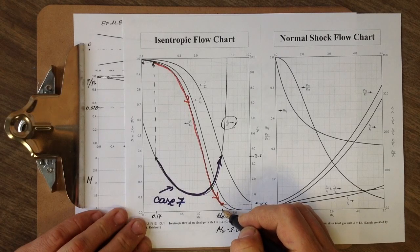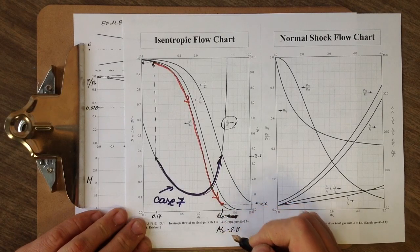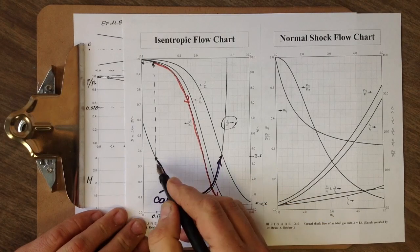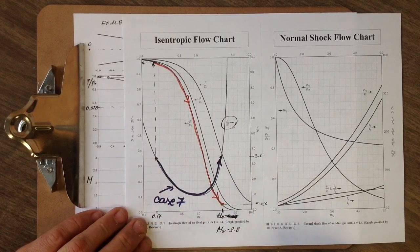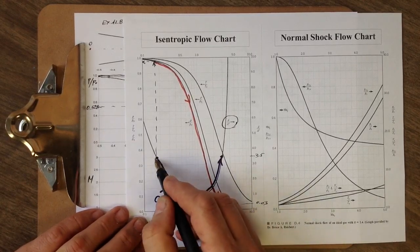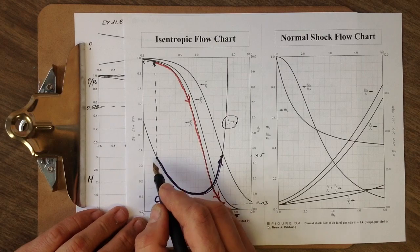So given that this is subsonic regime at the exit, our Mach number at the exit is going to be 0.17.